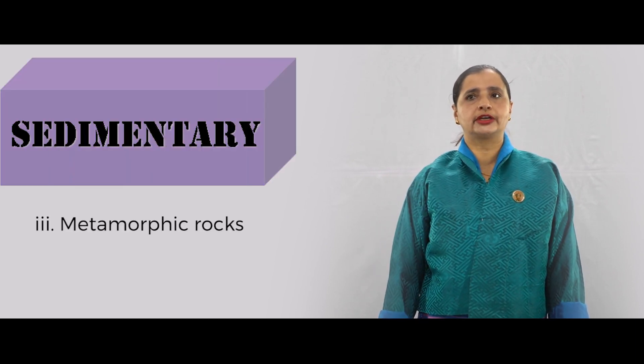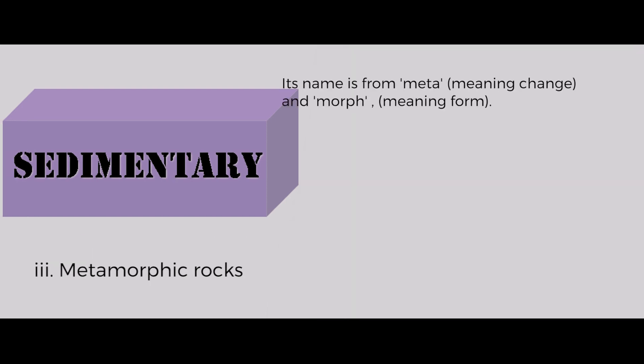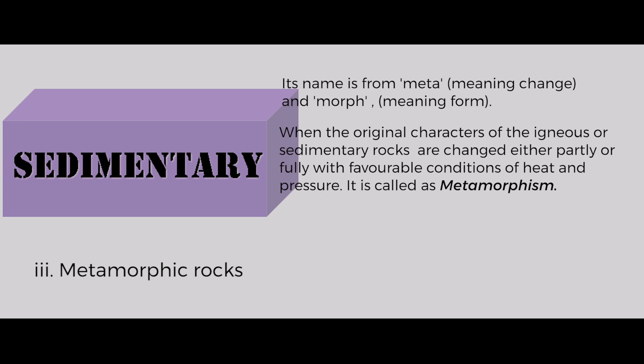The third type of rock is metamorphic rocks. The word metamorphic is derived from the Greek words 'meta' meaning change and 'morphic' meaning form. When igneous and sedimentary rocks change their original form into a new one under the influence of high temperature and pressure, it is called metamorphism. Metamorphism is the process of change of igneous and sedimentary rocks into metamorphic rock under the influence of high pressure and temperature.